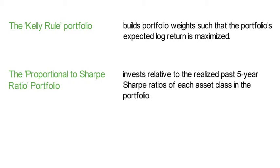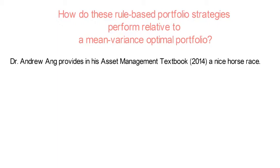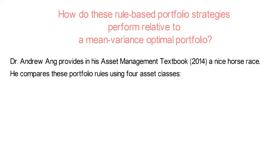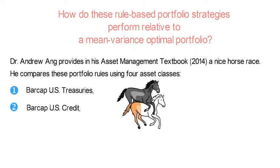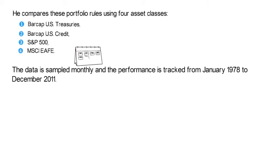Looking at all these different portfolios, a natural question pops up: how do these rule-based portfolio strategies perform relative to a mean variance optimal portfolio? My former colleague from Columbia Business School, Dr. Andrew Ang, provides in his asset management textbook a nice horse race — I refer to the 2014 edition. There he compares these portfolio rules using four asset classes: BarCap US Treasuries, BarCap US Credit, the S&P 500, and the MSCI EAFE.